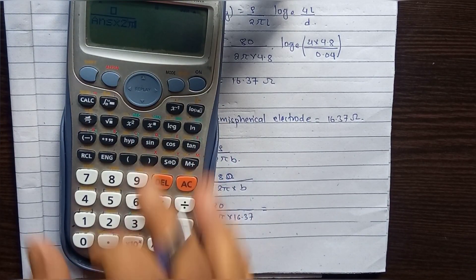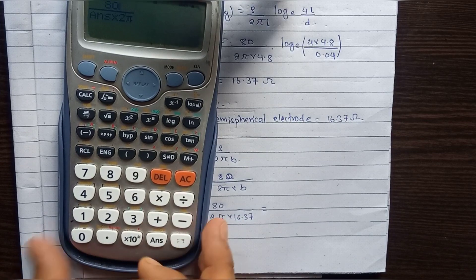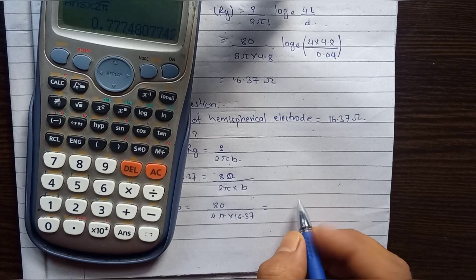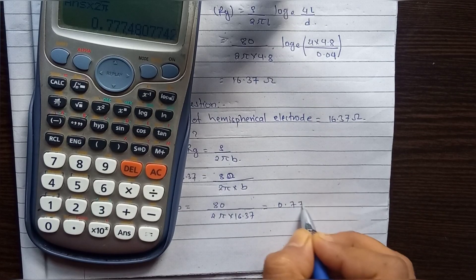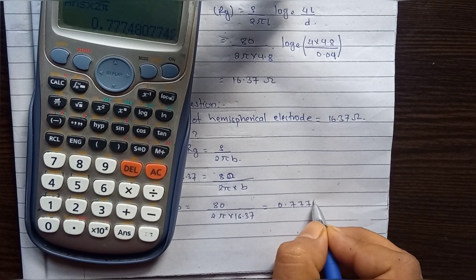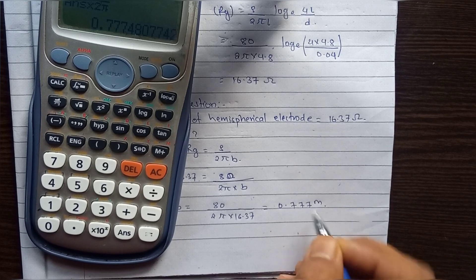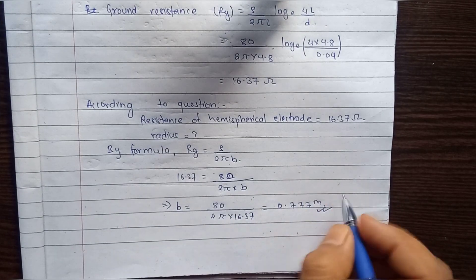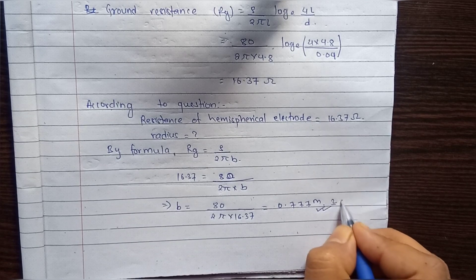This equals 80 / (2π × 16.37) = 0.777 meter, or nearly 0.8 meter radius.